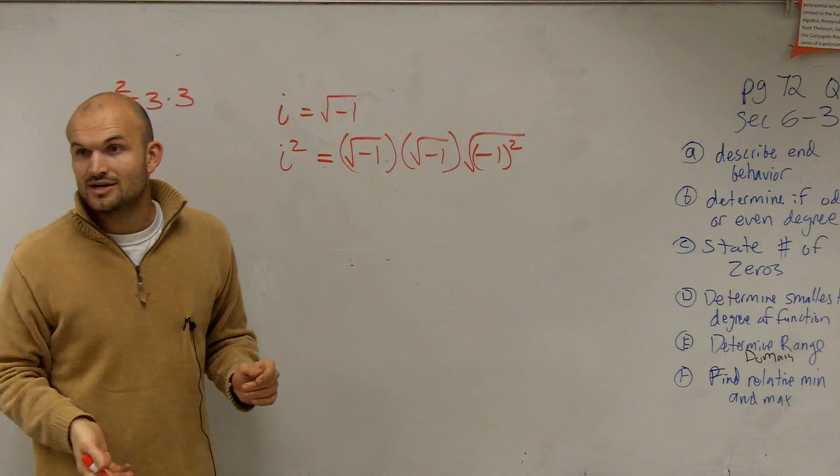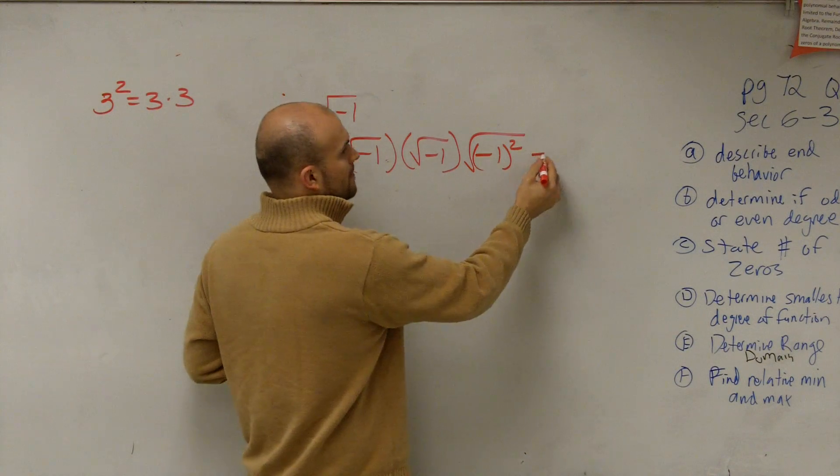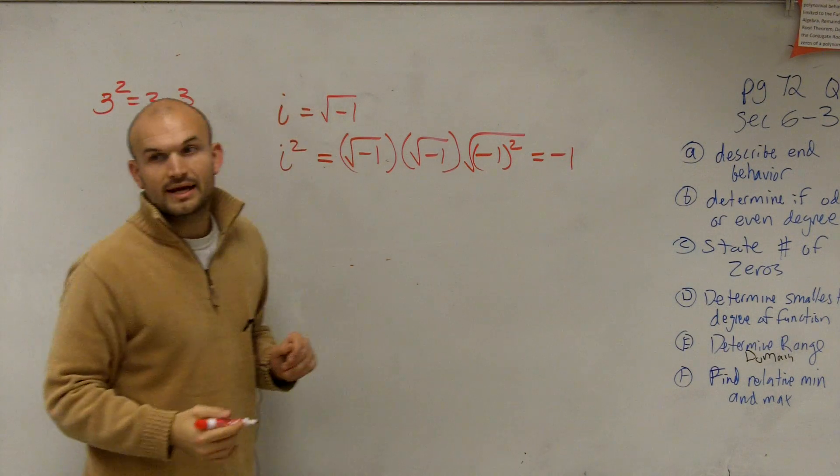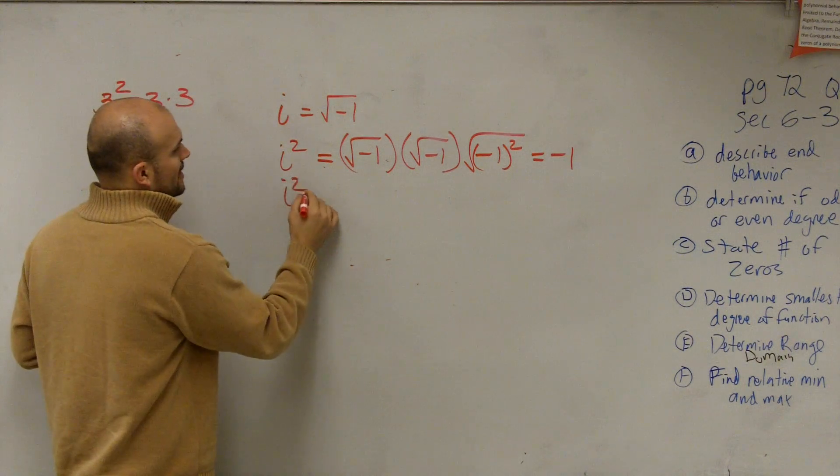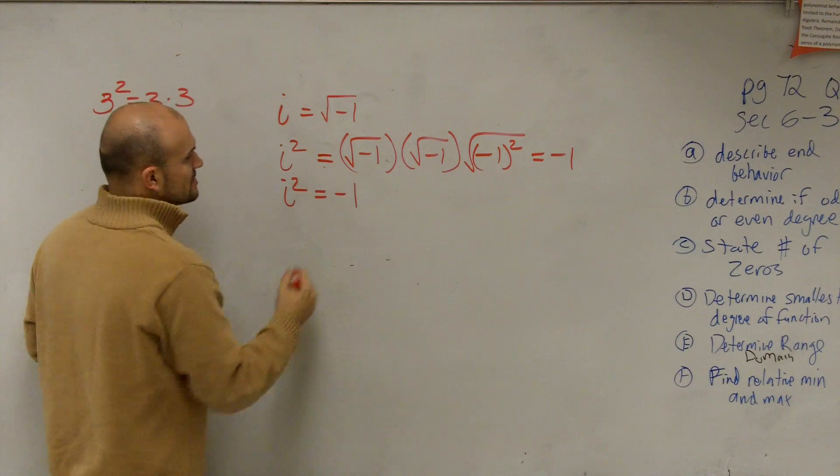Which undoes it, and then Austin, you said it, equals what? Negative 1. So you can say i squared equals negative 1.